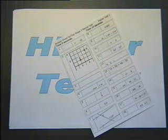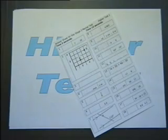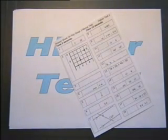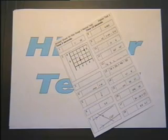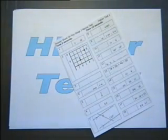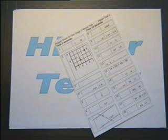Number 2. Write down the coordinates of the point R on the answer sheet. Number 3. Write this number, 54 million, in figures.